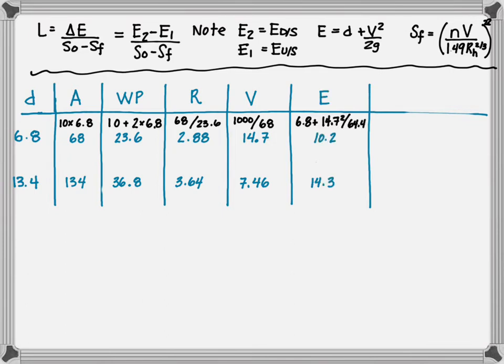The energy is the depth plus the velocity head. So 6.8 plus the 14.7 squared divided by 2 times 32.2 gives us 10.2 and 14.3. And the friction slope is the roughness, 0.015 times my velocity, 14.7 divided by 1.49 times 2.88 to the two thirds power. All that entire thing squared gives me a friction slope of 0.00535. And at the upstream location, 0.00101.